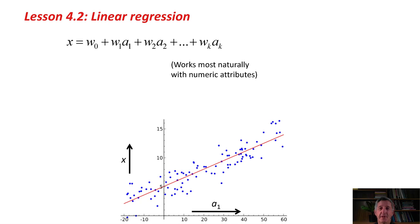w0 plus w1a1 plus w2a2, and so on. Just think about this in one dimension where there's only one a. Forget about all the things at the end here. Just consider w0 plus w1a1. That's the equation of this line. That's the equation of a straight line, where w0 and w1 are two constants to be determined from the data. This, of course, is going to work most naturally with numeric attributes, because we're multiplying these attribute values by weights.